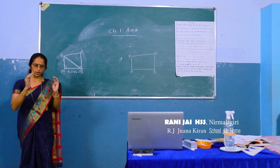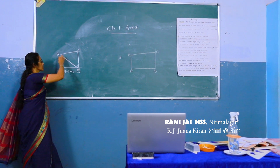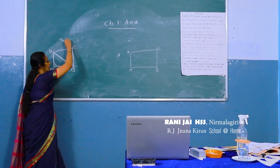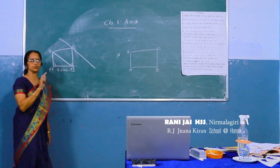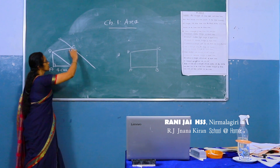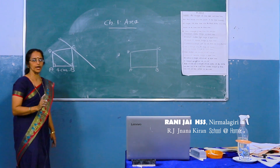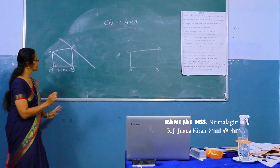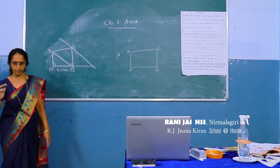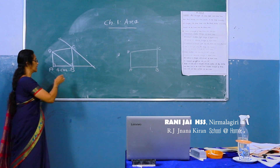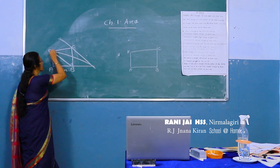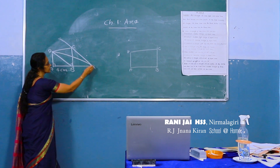Note down the points. Method of drawing: draw the diagonal BD. Draw a line parallel to BD through C. Extend AB to clip in the parallel line at a new point. Join the new point to D.